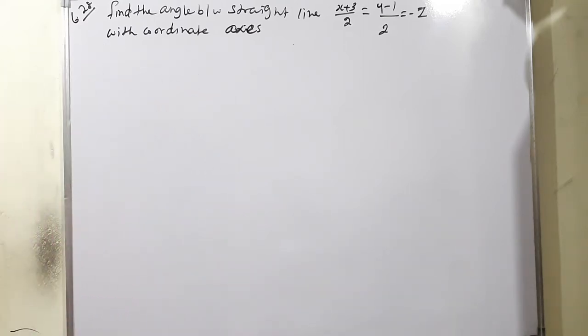I am moving to example 6.28. Question: find the angle between the straight line x plus 3 by 2 equals y minus 1 by 2 equals negative z, with the coordinate axes.